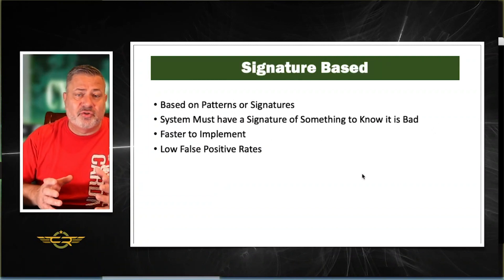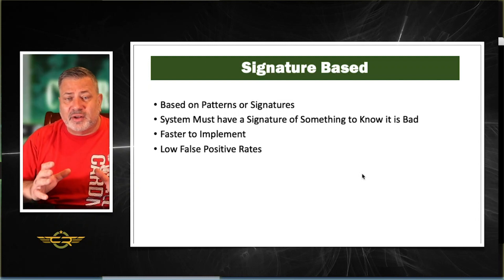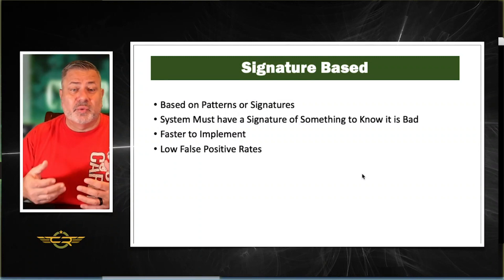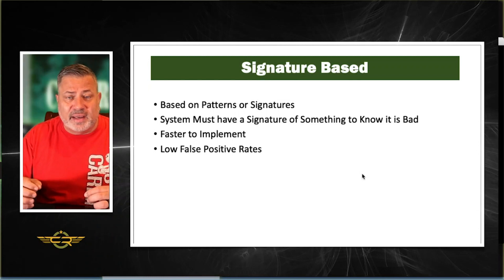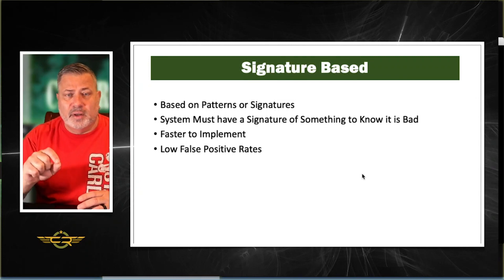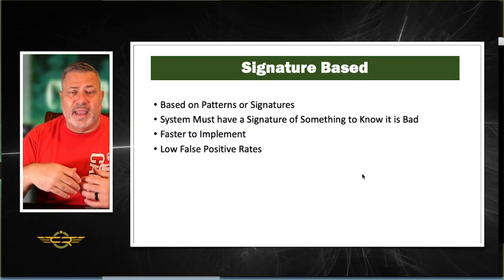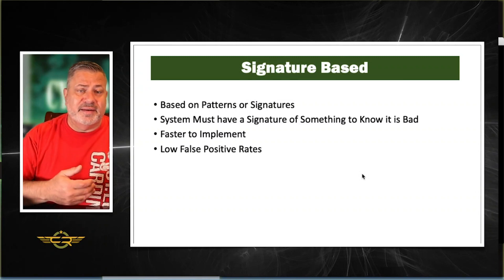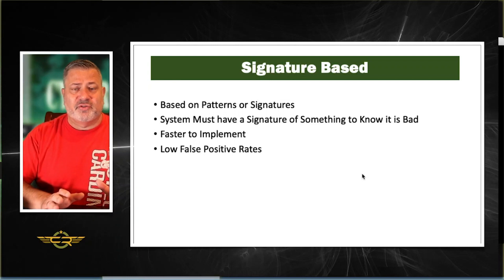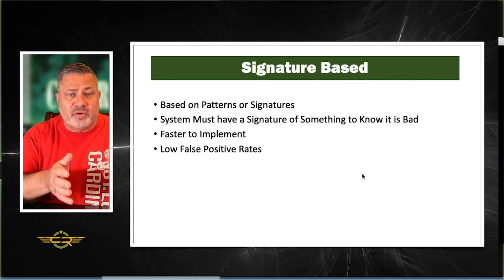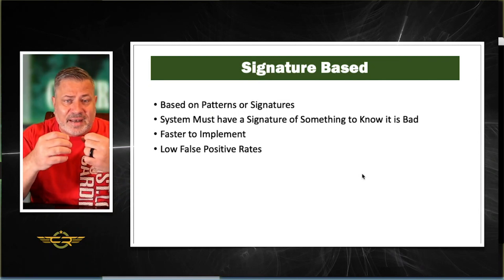Both NIDS and NIPS can be signature-based — like antivirus, based on signatures or patterns. The system must have a signature of something it knows as bad to be able to react to it. Someone defines in a file what an attack looks like, so if a specific attack like a worm looks a specific way, it can be defined. If an IDS or IPS sees it on the network, it can react by detecting or preventing it. Signature-based systems are faster to implement and have low false positive rates.